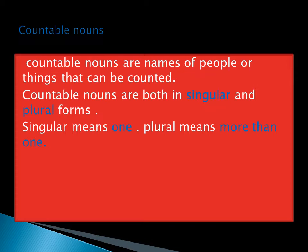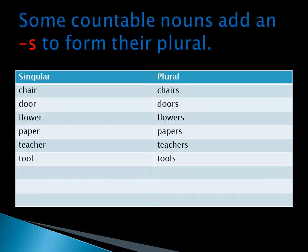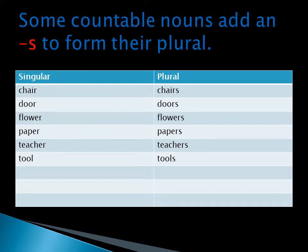We have different types of countable nouns and they always take different forms in their plural. Some countable nouns add an S to form their plural. For example: singular chair, plural chairs; door, doors; flower, flowers; paper, papers; teacher, teachers; tool, tools.